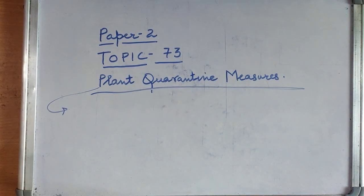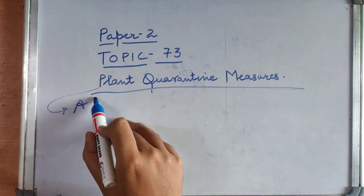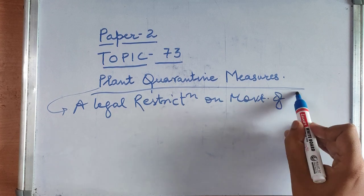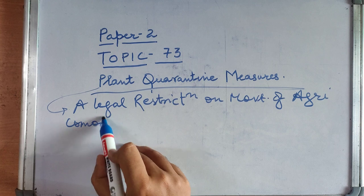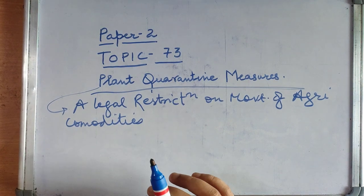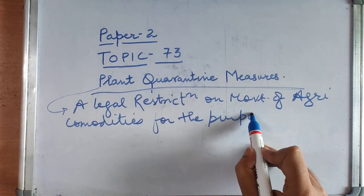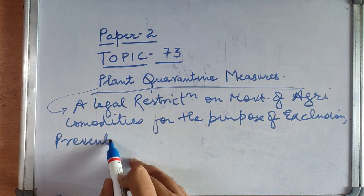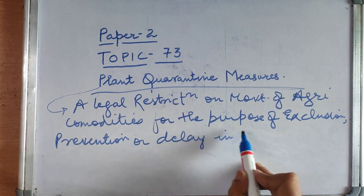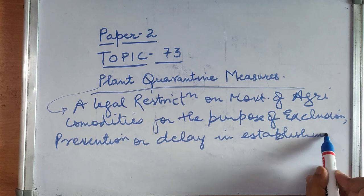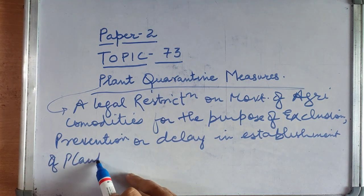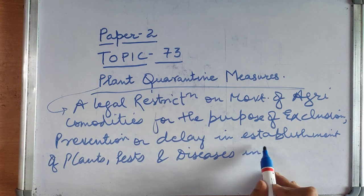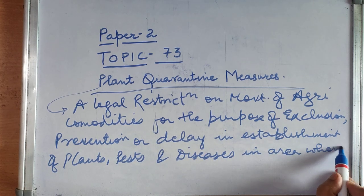So what is plant quarantine? It is the legal restriction on movement of agriculture commodities for the purpose of exclusion, prevention, or delay in establishment of plants, pests and diseases in areas where they are not present.